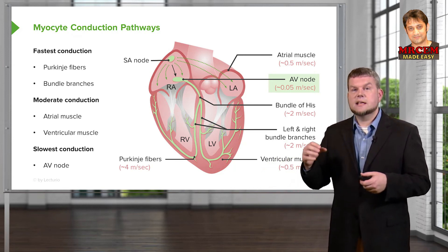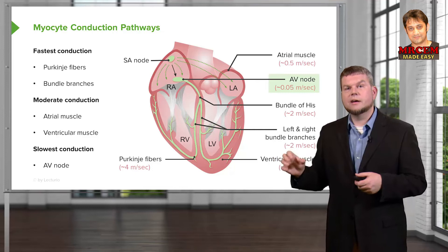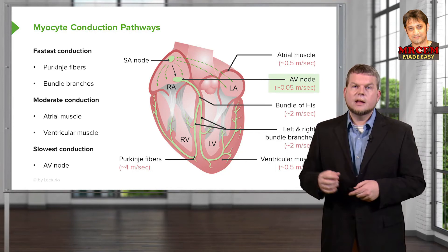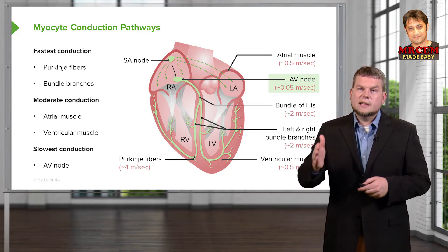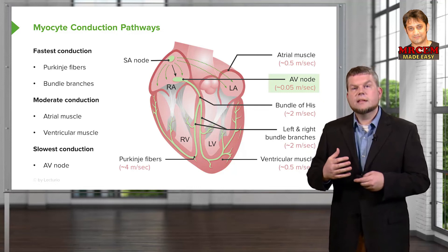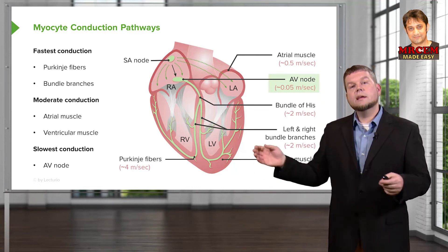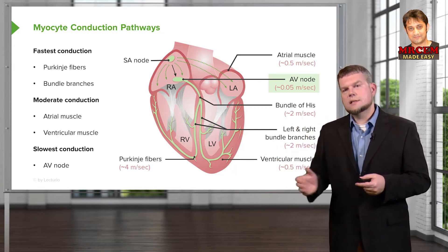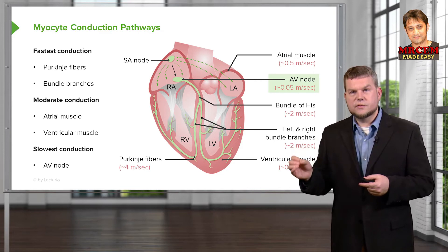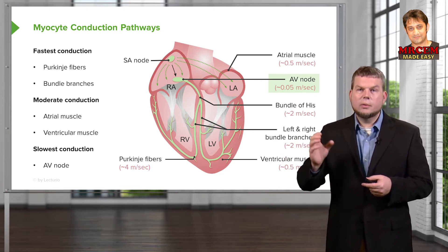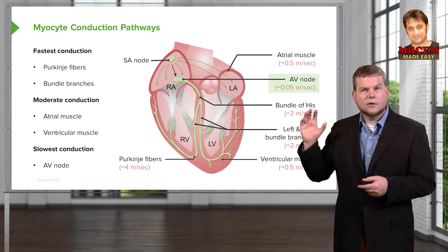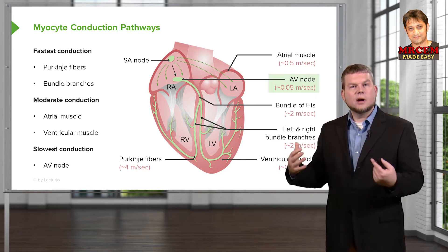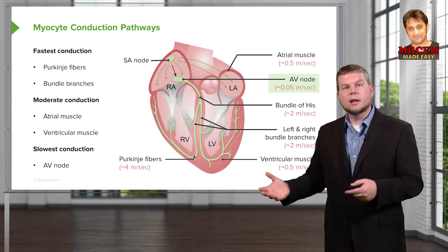You couldn't depolarize the whole heart at the same speed or you wouldn't get this pumping ability. Once information is sent down the bundle branches to Purkinje fibers, it is important that it happens very quickly because you want to make sure they contract as a unit. These conduction velocity speeds make a lot of physiological sense, and that is why we go through them so you have a good feel for how the conduction process works with the mechanics to pump blood throughout the body.